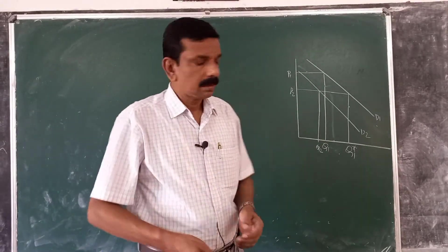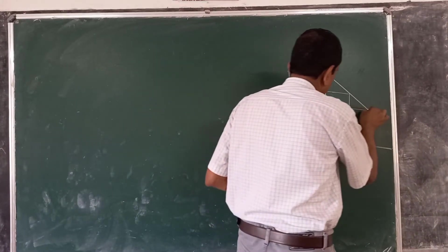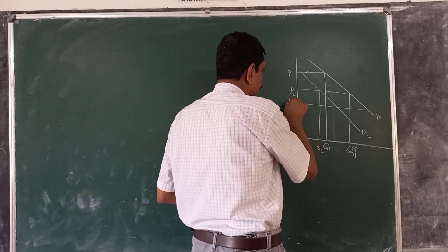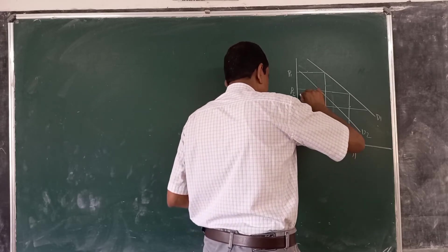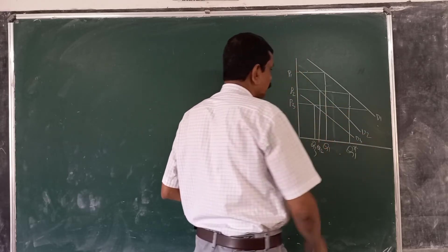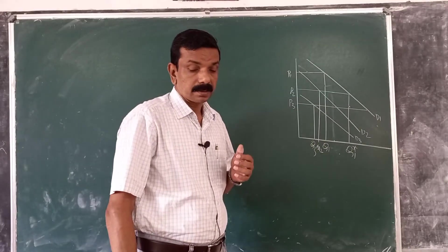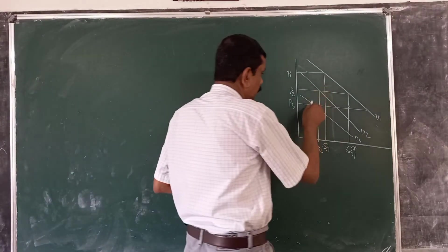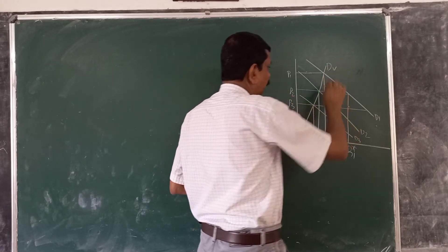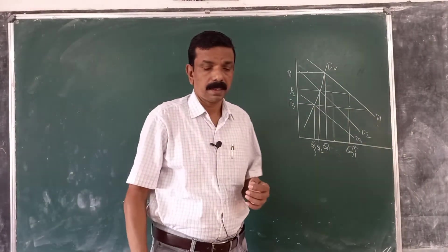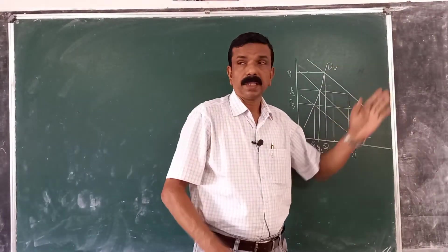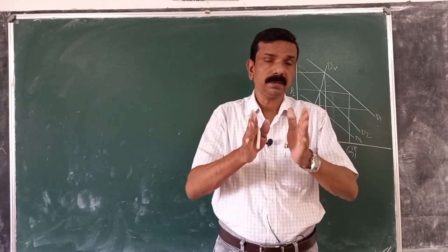Now, if the price again decreases to P3, quantity demanded again decreases to Q3. And if you join together these points, you will get an upward sloping demand curve, which is known as the Veblen demand curve.